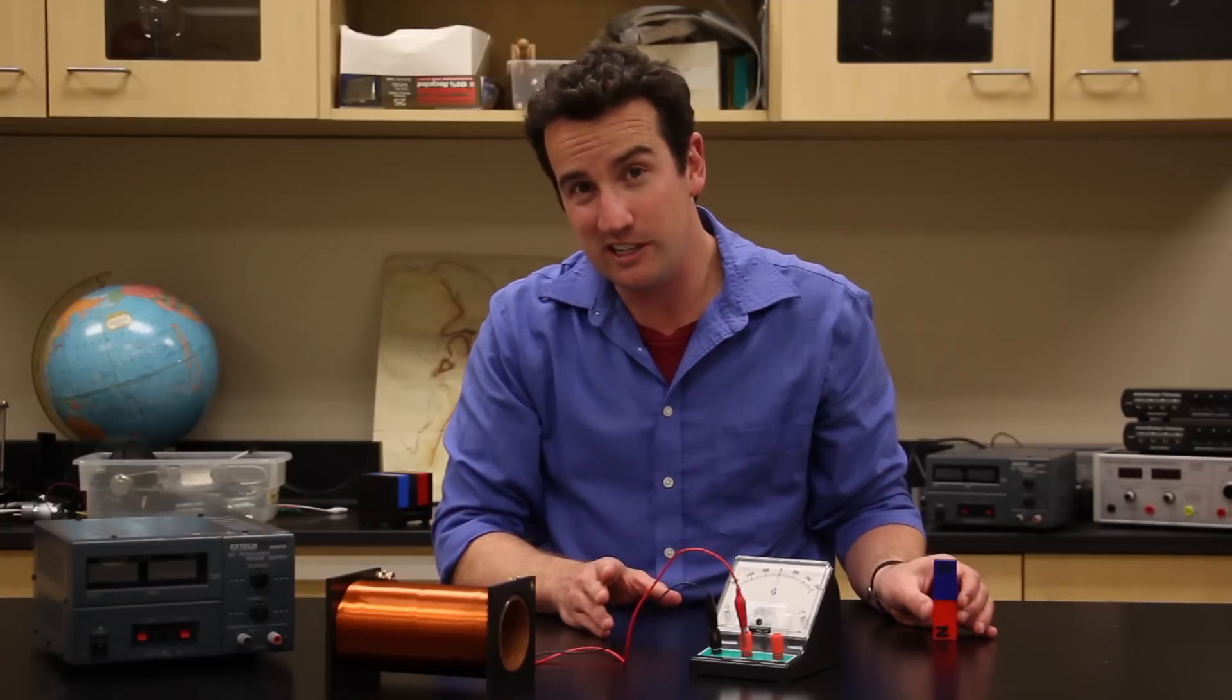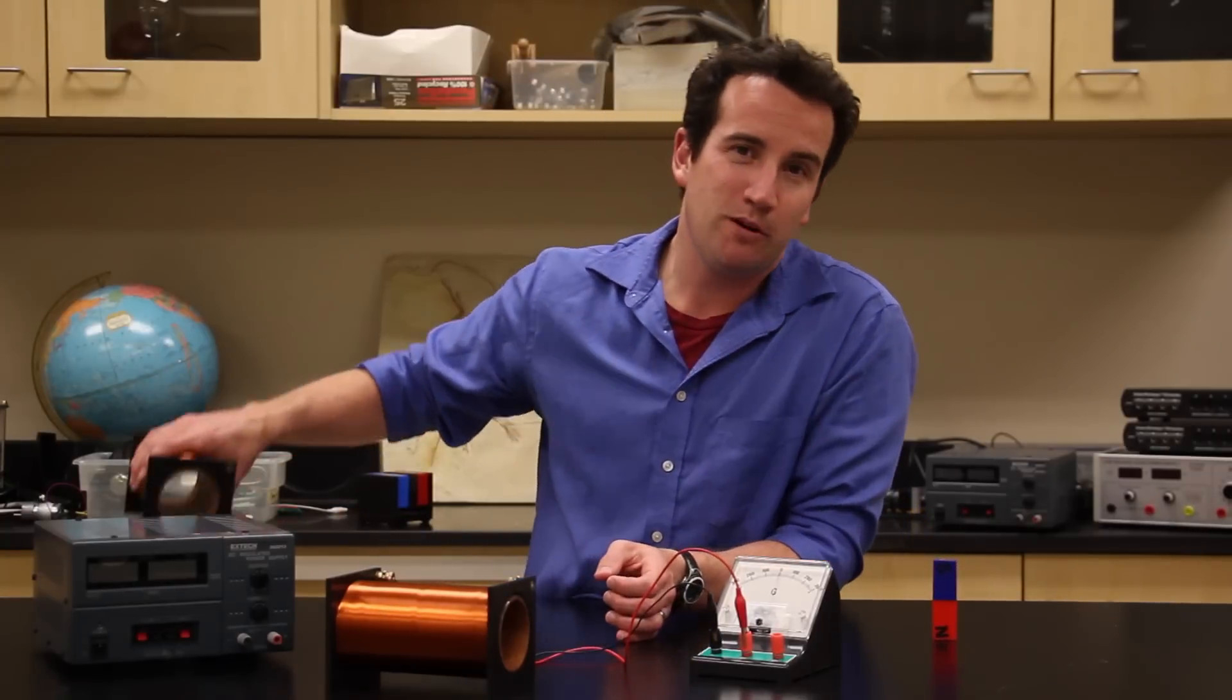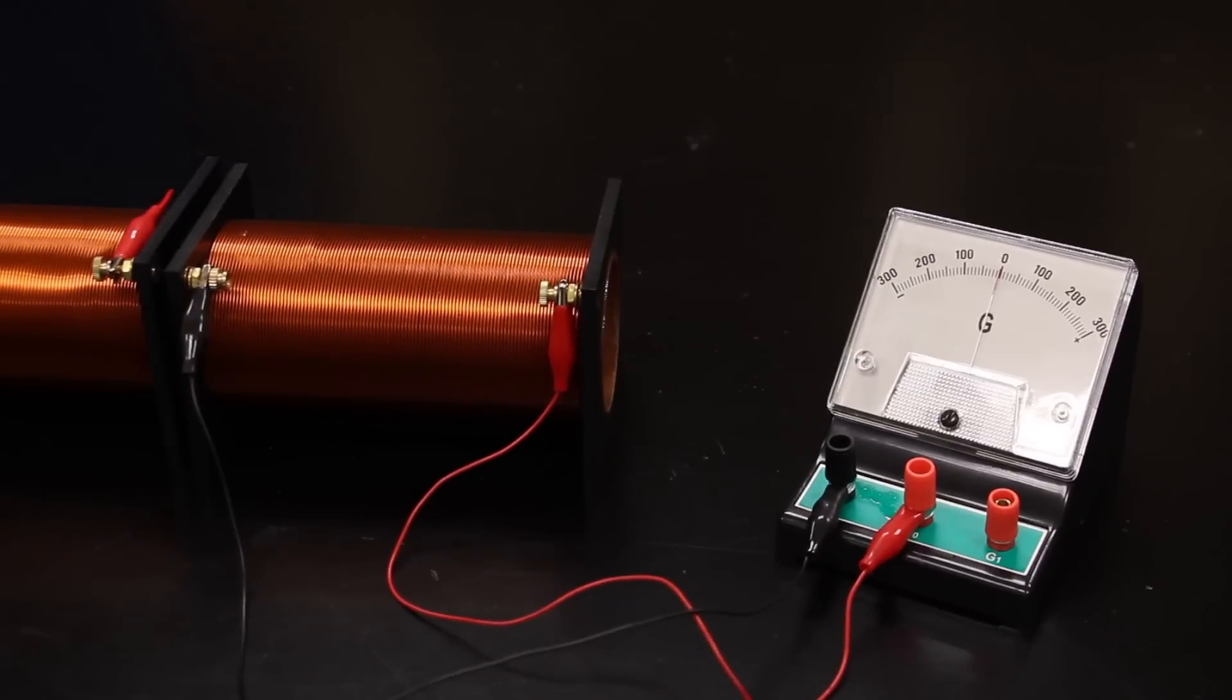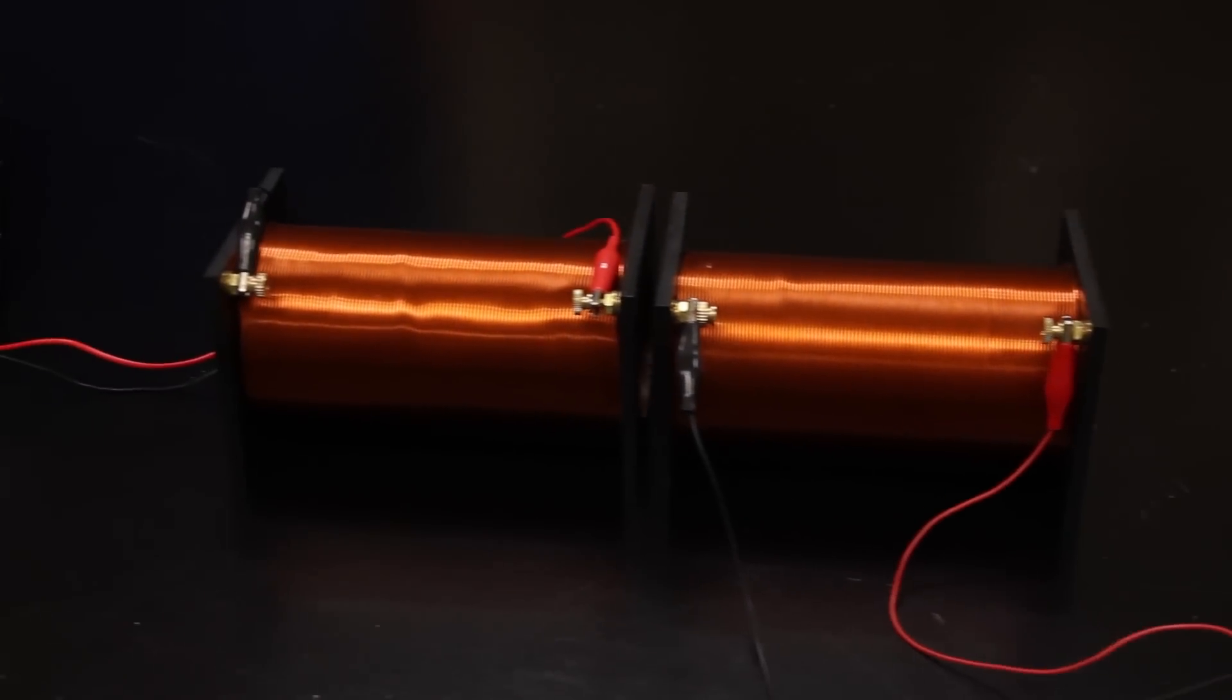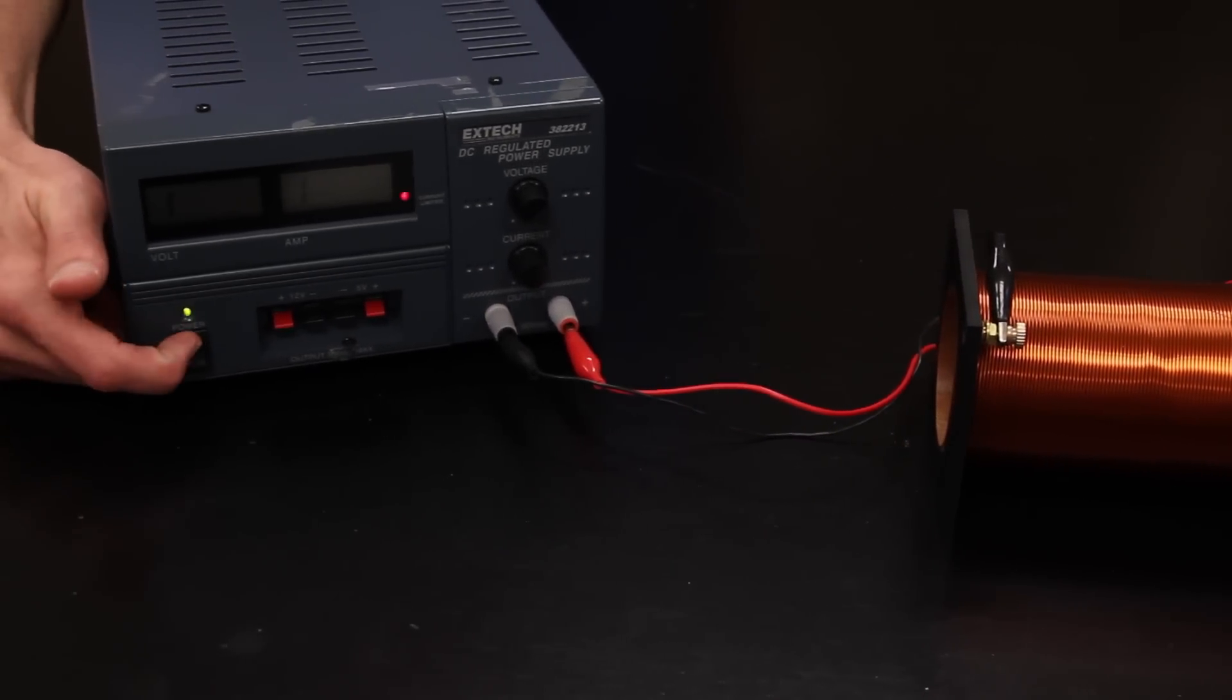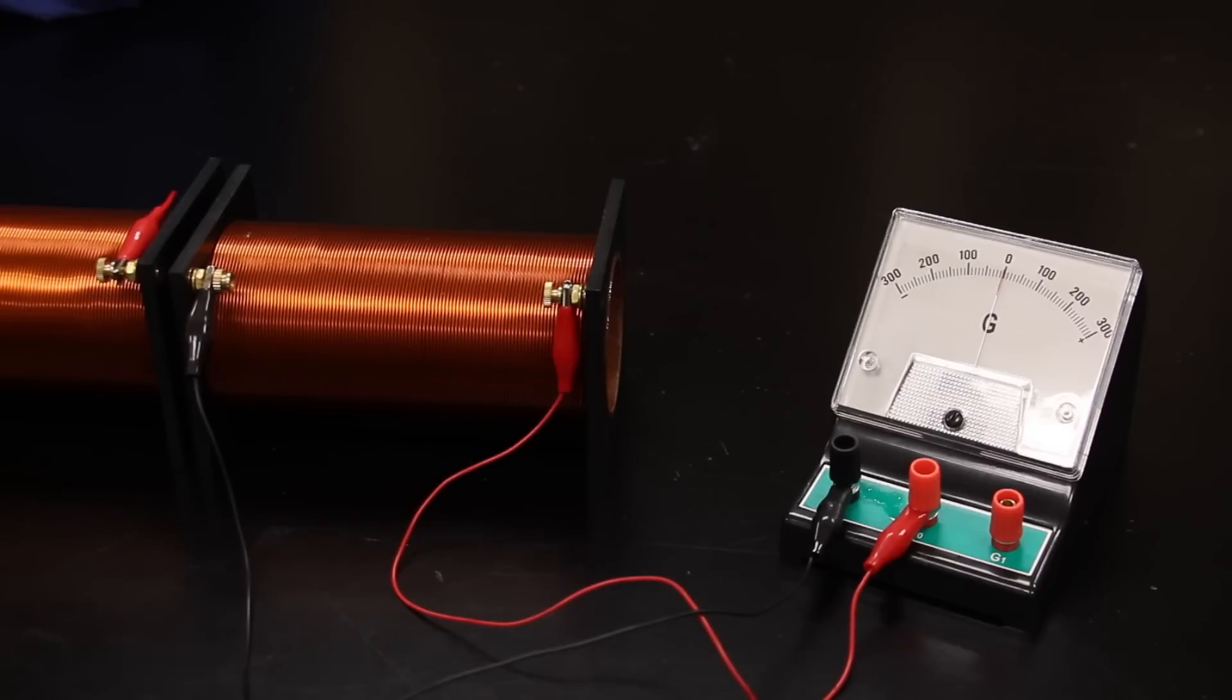Now, the transformer puts both of these ideas together, but instead of using a bar magnet, it uses an electromagnet. When I turn on the power supply, it briefly produces a changing magnetic field in the first coil, and that produces a brief electric current in the second coil.